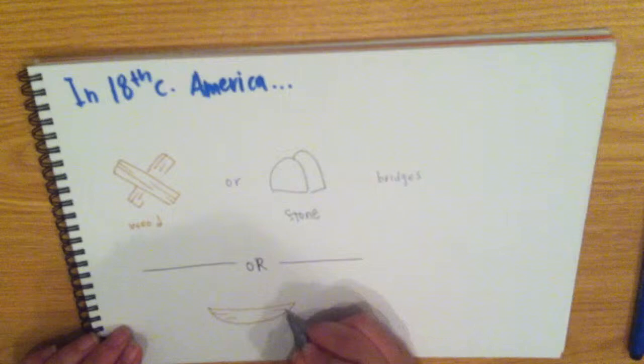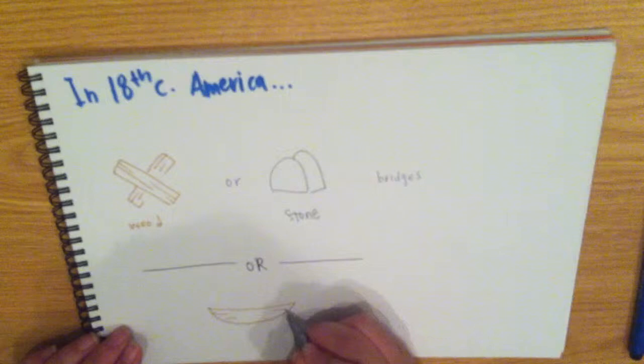The ferryboat was also an option if there wasn't a bridge, which was often because the technology wasn't that great. The problem was that when it rained,